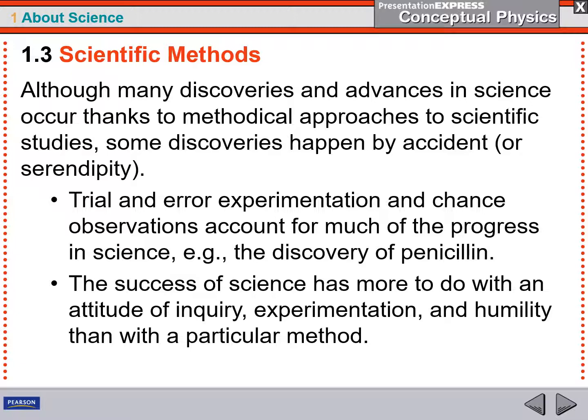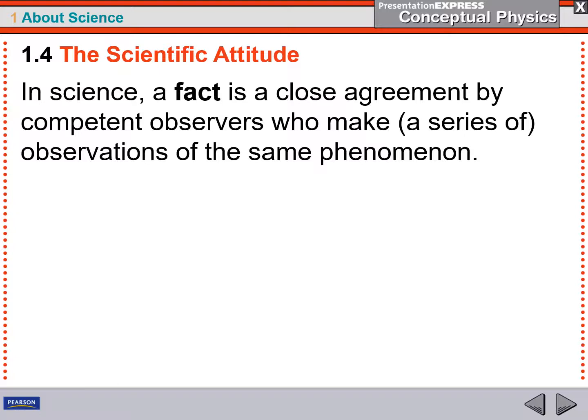Although many discoveries and advances in science occur, thanks to these scientific methods, other discoveries happen by accident. We say they're serendipitous. Trial and error experimentation and chance observations account for much of the progress in science. But occasionally, people just discover things by accident. It's more about the attitude of inquiry, the idea that we're trying to understand nature and uncover truth. That's what makes something scientific. It's not the questions, but the approach.